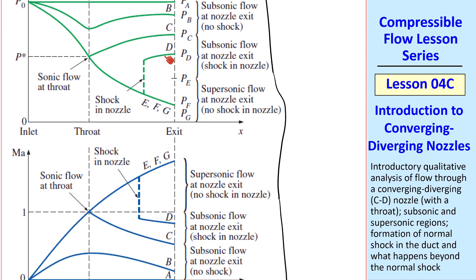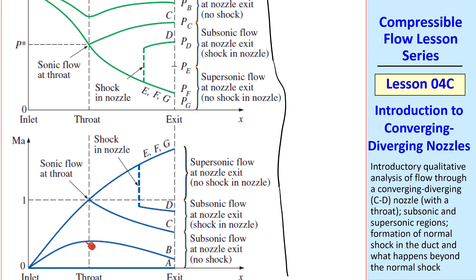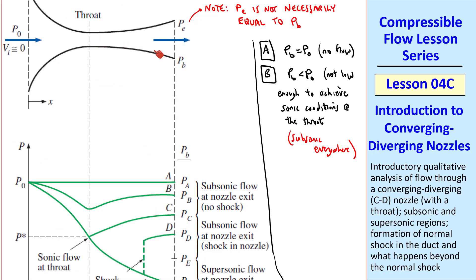This is similar to what we're used to with something like a Bernoulli equation. As pressure goes down, velocity, or here Mach number, goes up, reaches a peak at the throat when pressure reaches a minimum, and then decays after that in the diffusing part of the CD nozzle. But Bernoulli's equation doesn't apply here unless the Mach numbers are very small.